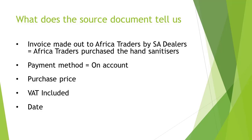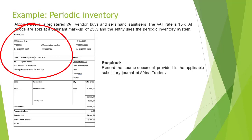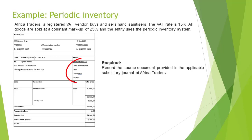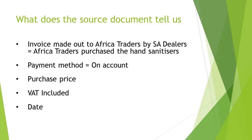Firstly, the invoice was made out to Africa Traders by SA Dealers. That means that Africa Traders purchased the hand sanitizers. Under the Payment Method, it's indicated that the purchase was done on account, meaning the purchase was done on credit. The invoice also indicates the purchase price, the VAT included, and the date of the transaction.